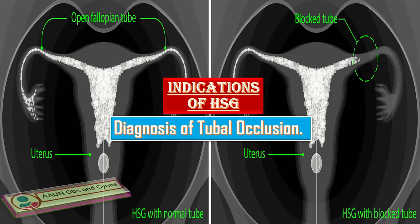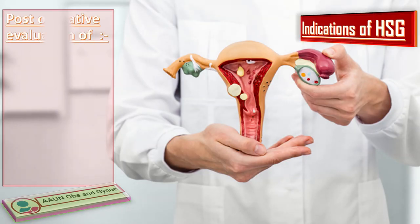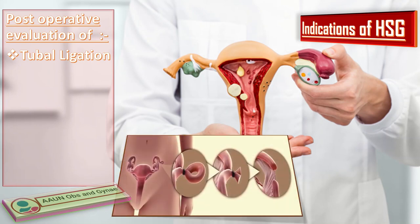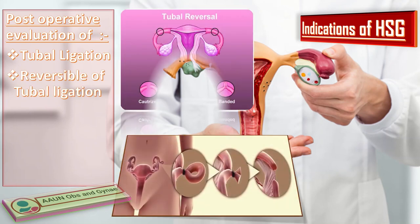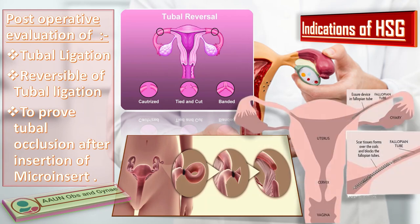HSG helps in diagnosing tubal occlusion. Normally, even spillage of radio-opaque dye is seen in both fallopian tubes. In the case of tubal occlusion, the dye spillage on the occluded side is blocked. Other indications include post-operative evaluation of tubal ligation, reversal of tubal ligation, and proving tubal occlusion after insertion of transcervical sterilization when a micro-insert is used.